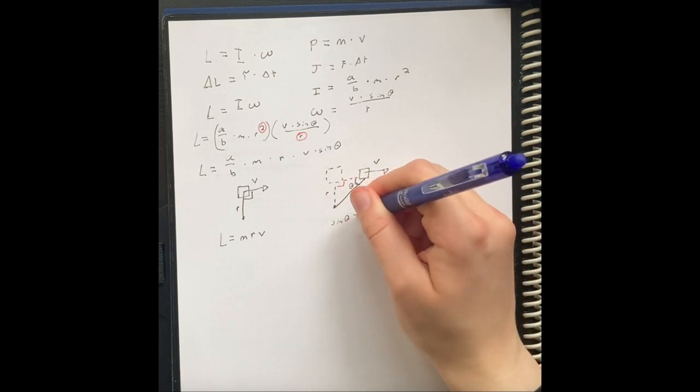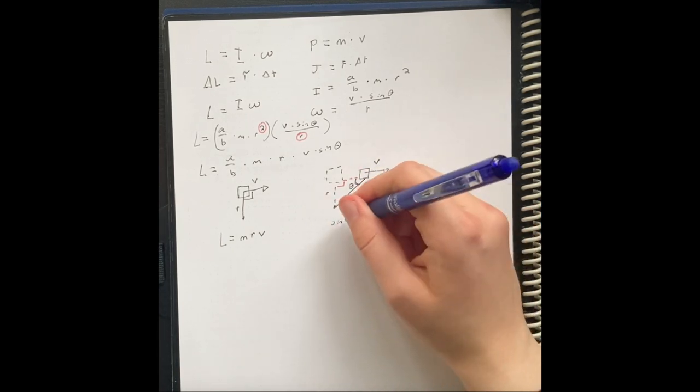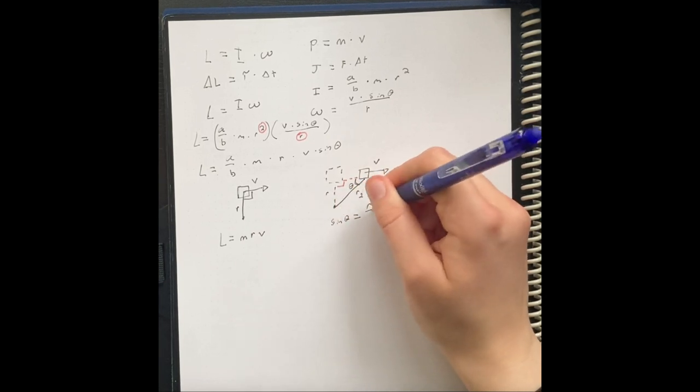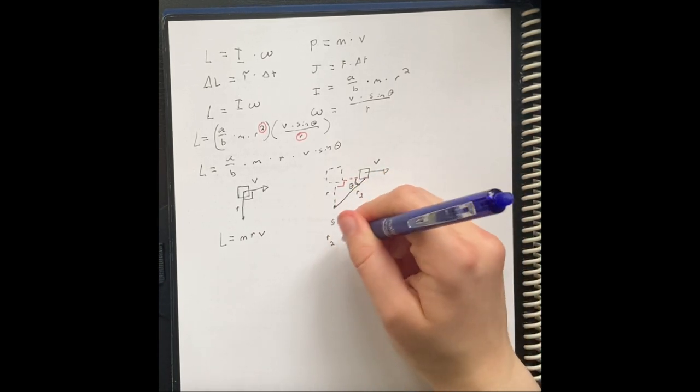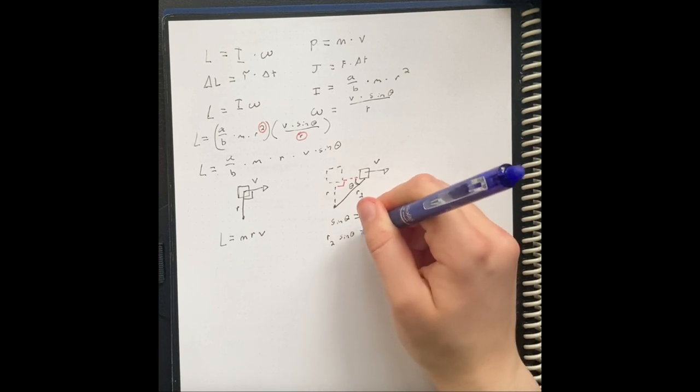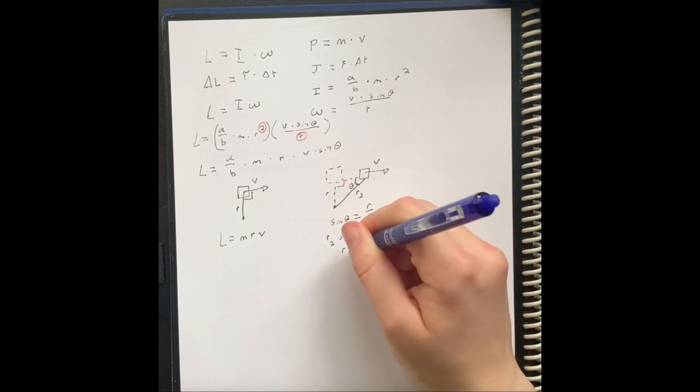And basically, sine of theta is going to be equal to opposite over hypotenuse, Sokotoa, r over r2. We multiply both sides by r2, and then divide both sides by sine of theta.